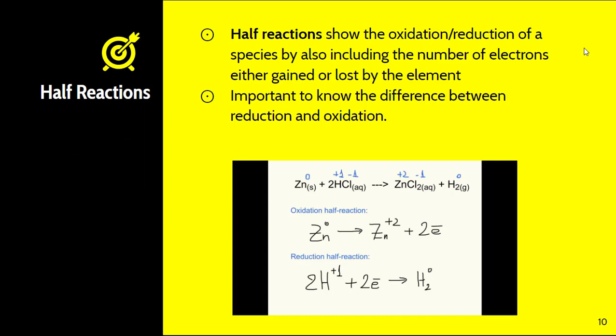So again just a reminder, half reactions show the oxidation and reduction of a species by also including the number of electrons either gained or lost by the element. Again it is important to know the difference between reduction and oxidation. When we oxidize something we are losing electrons. So if you look at the oxidation half reaction we have those electrons and then they go away in the product section. When we reduce something we are gaining electrons. Gaining is reduction. Gaining electrons is reduction. So as a result they're part of the reactants part. Assign oxidation numbers, figure out what those half reactions look like, and know the difference between reduction and oxidation.